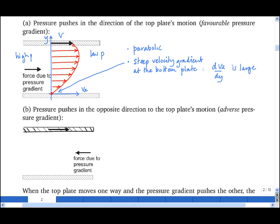Now let us consider the opposite case, where the top plate still moves from left to right, but this time the pressure gradient pushes in the other direction, high pressure on the right-hand side and low pressure on the left-hand side.